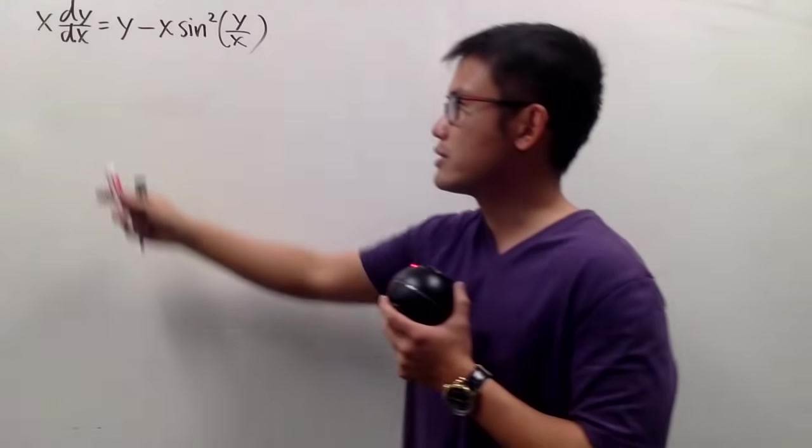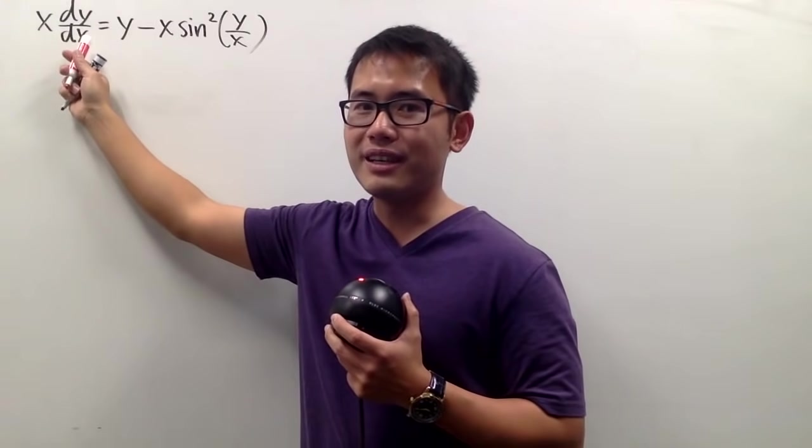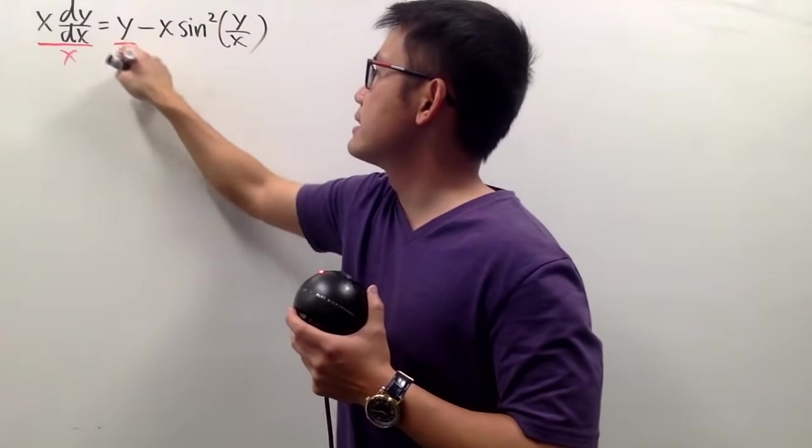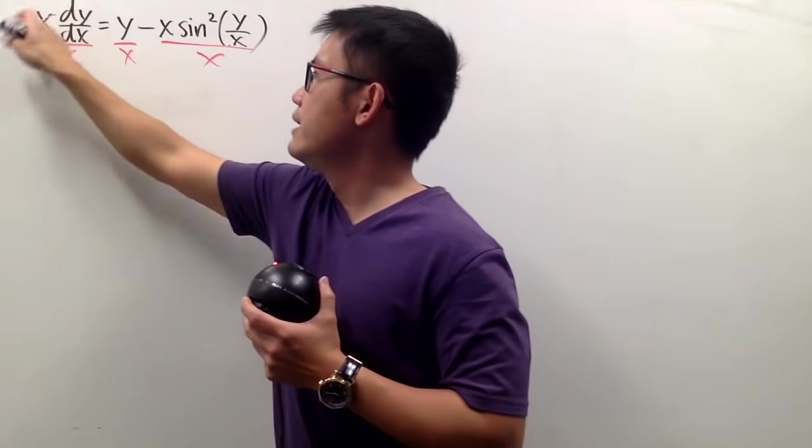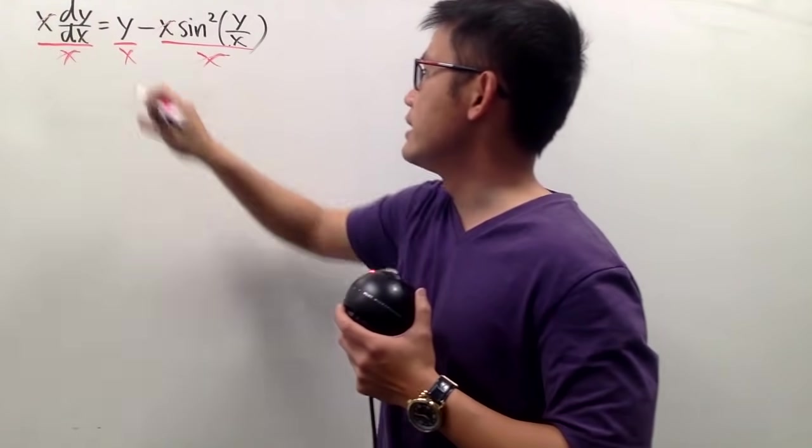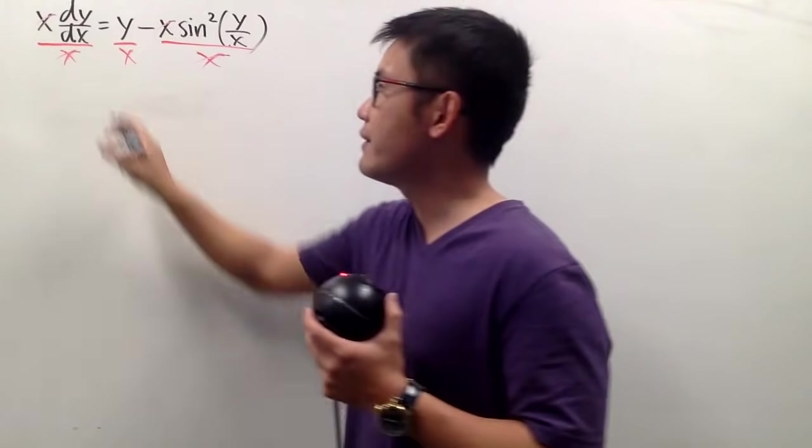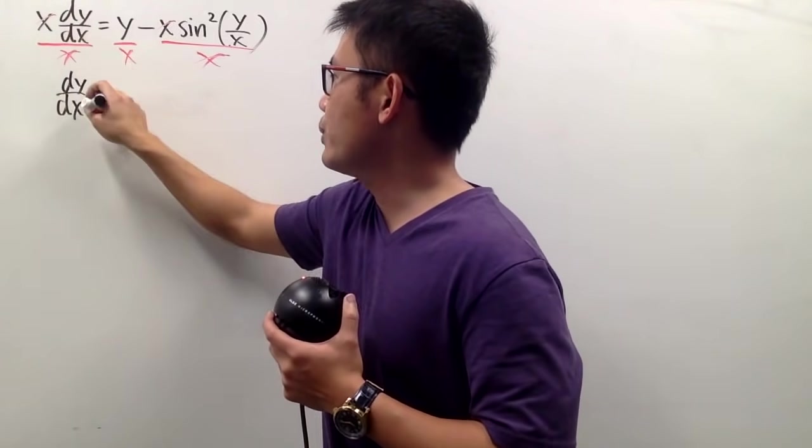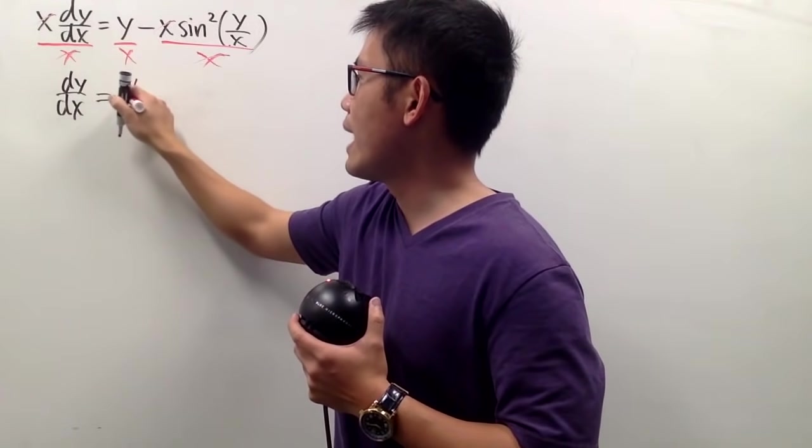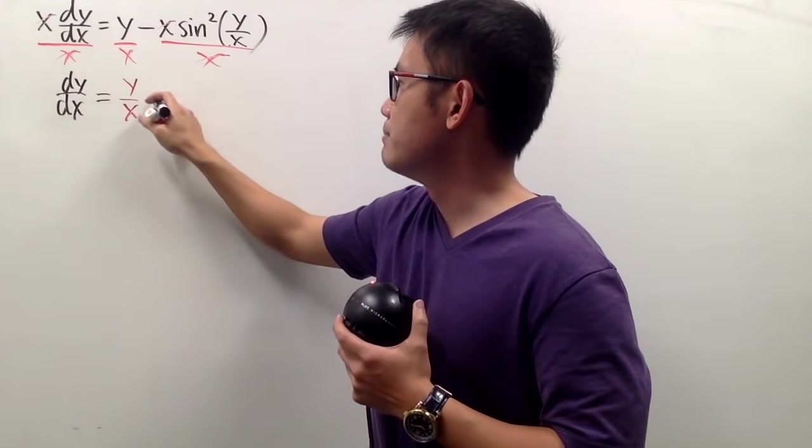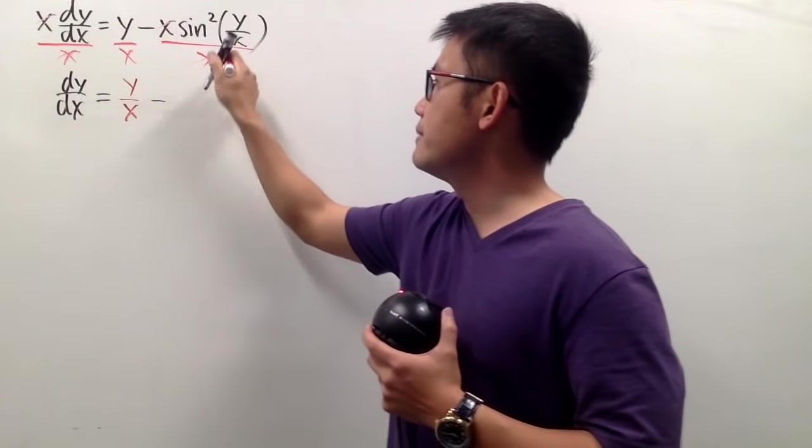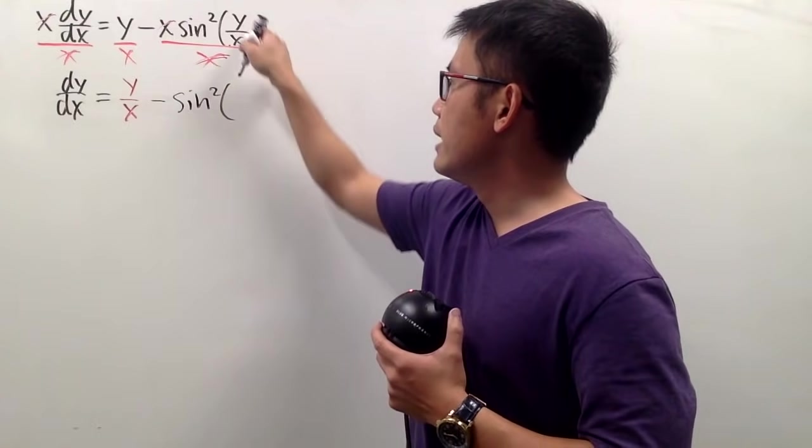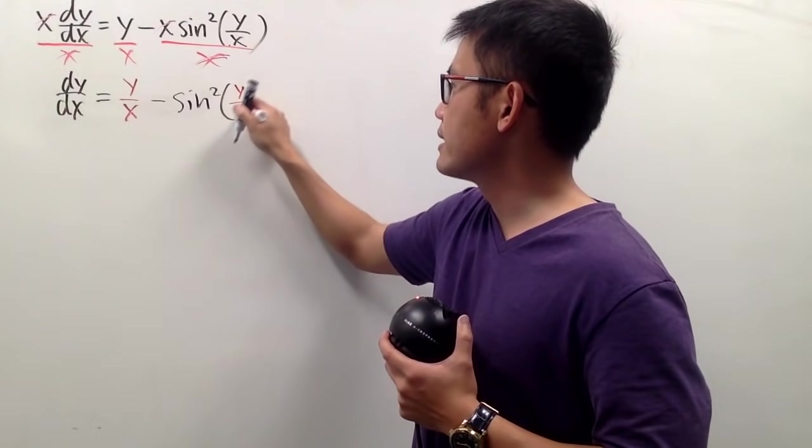And this is actually achievable thanks to this x right in front of the dy dx. So, to make that happen, let's divide everything by x. And you see right away, this and that cancel. Likewise, this and that cancel. And we just have the dy dx right here. And that's equal to, this is now y over x. And then that's minus, the x's cancel each other already. So, here we have just the sine squared, and the input is y over x here.